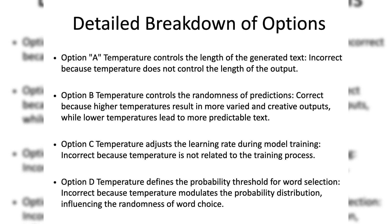Option B: temperature controls the randomness of predictions. This is correct because in the context of generative AI, the temperature parameter influences the randomness of the model's predictions. A higher temperature makes the model's predictions more varied and creative by flattening the probability distribution, allowing for a broader range of possible outputs.